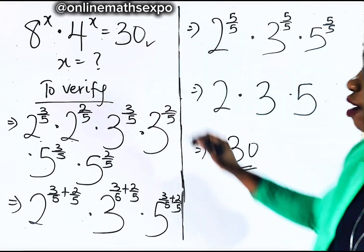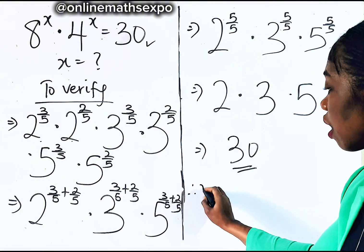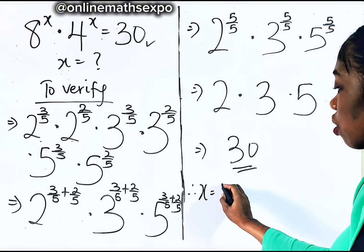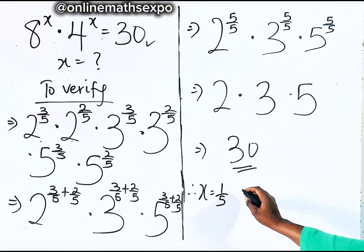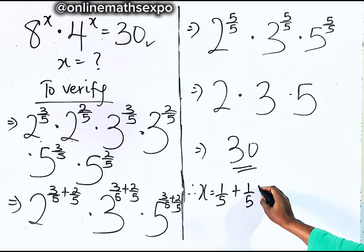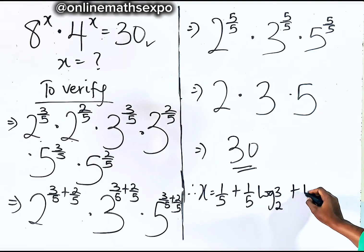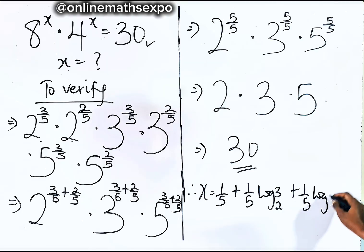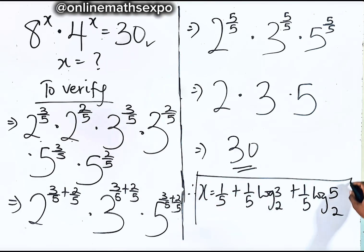And that is exactly what we have on the right side. So it confirms that x equals one fifth plus one fifth log 3 base 2 plus one fifth log 5 base 2 is absolutely correct.